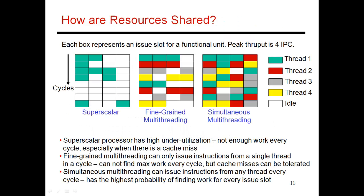Here's another pictorial view. These processors are referred to as superscalar processors because they can handle multiple instructions in the same cycle. There are some cycles where you could find three instructions to issue, but then there are many other cycles where you find zero, two, or even one instruction to issue. So all these white blocks represent underutilization, and maybe you can fill in those slots by feeding instructions from multiple threads.